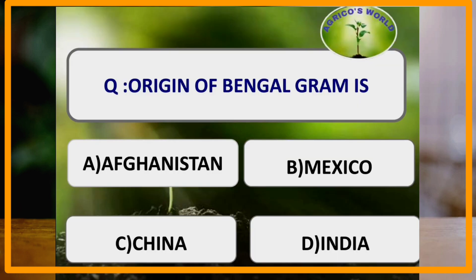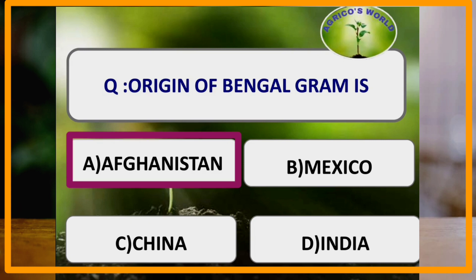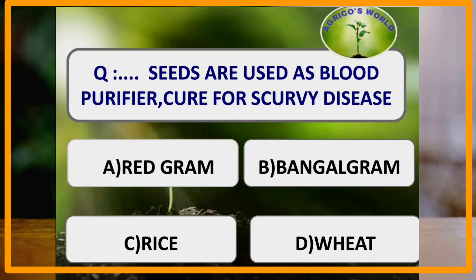Our first question: Origin of Bengalgram is? The answer is Afghanistan. Bengalgram is also known as chickpea. Seeds of which of the following crop are used as blood purifier and to cure scurvy disease? The answer is Bengalgram. Germinating seeds of Bengalgram are used as blood purifier and to cure scurvy disease.